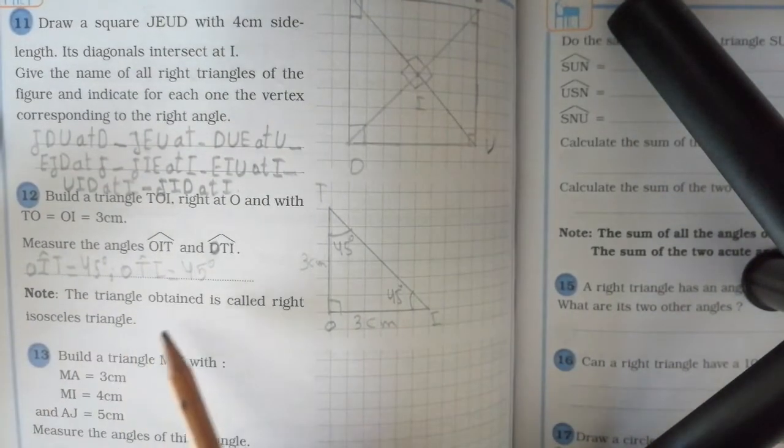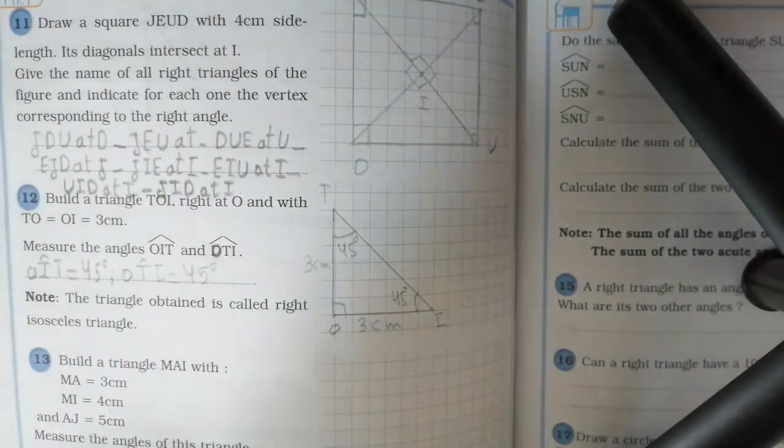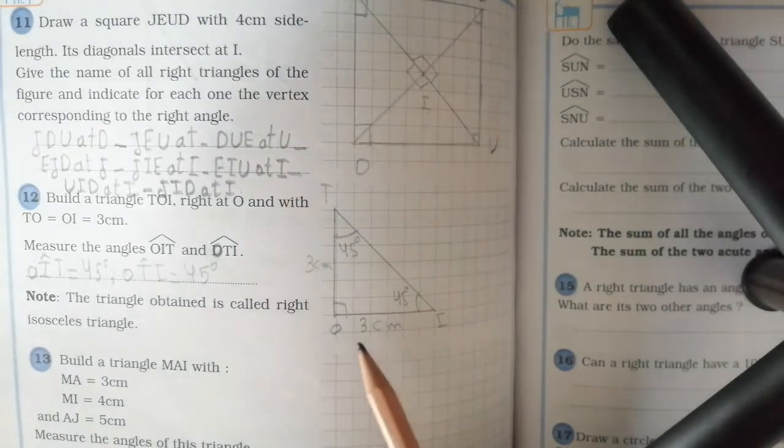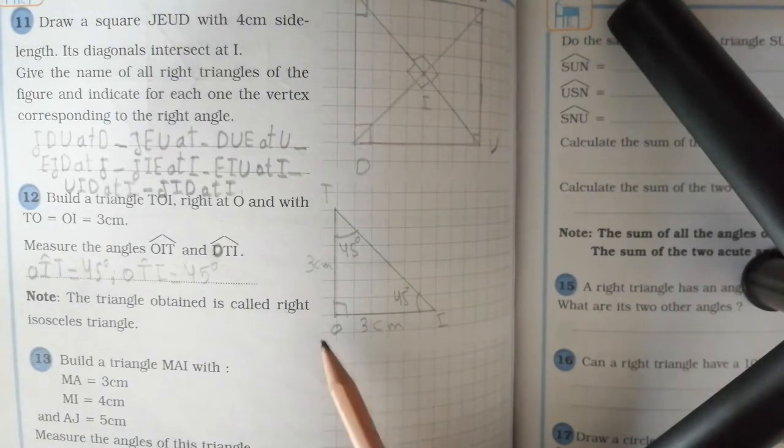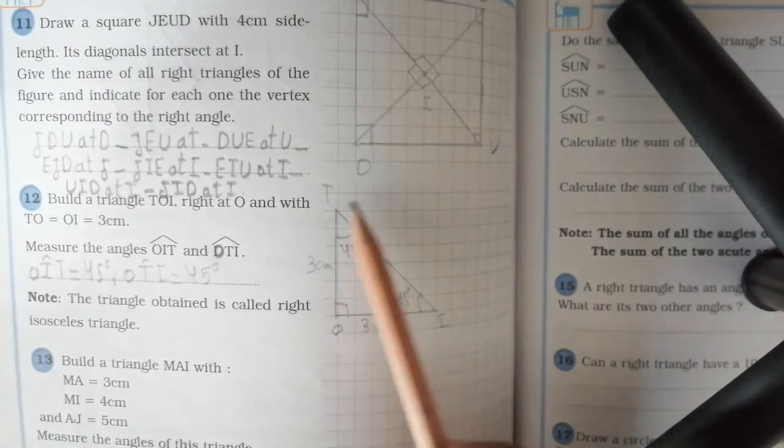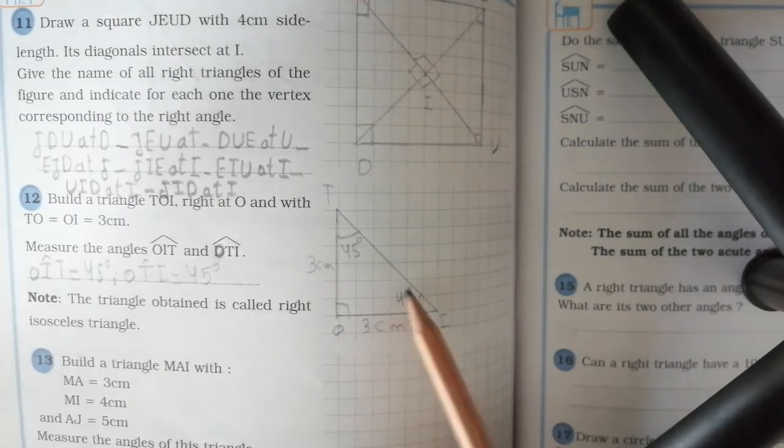Note: the triangle obtained is called a right isosceles triangle. This triangle is a right isosceles triangle because it has a right angle, two equal sides, and two equal angles of measure 45 degrees.